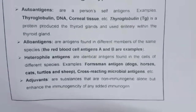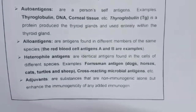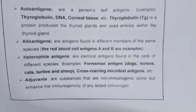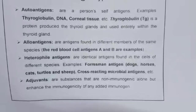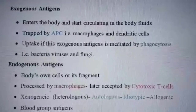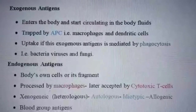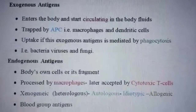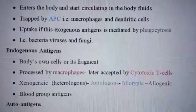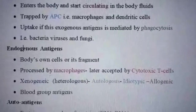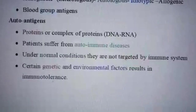Adjuvants are substances that are non-immunogenic alone but they enhance the immunogenicity of any added immunogen. So far, we have discussed exogenous antigens, which enter the body from outside, and endogenous antigens, which are produced by the body itself or are fragments of the cell.